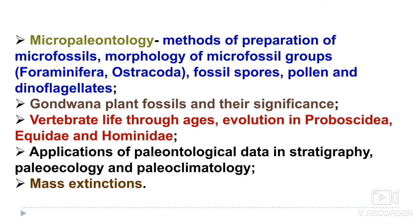In micropaleontology, you need to study methods of preparation of microfossils and the morphology of microfossil groups: foraminifera, ostracods, fossil spores and pollen, and dinoflagellates. Focus on their morphology, significance, and uses — for example, application of foraminifera in the petroleum industry, in sequence stratigraphy, or in structural geology. Gondwana plant fossils and their significance are also very important — you can get a question on upper or lower Gondwana plant fossils.